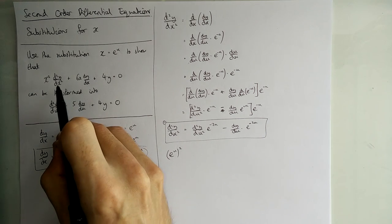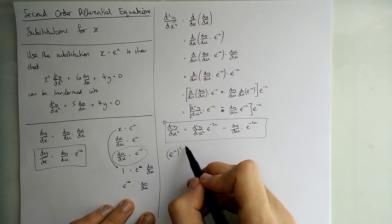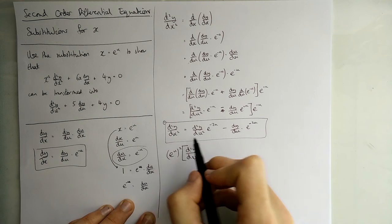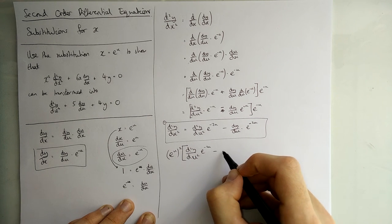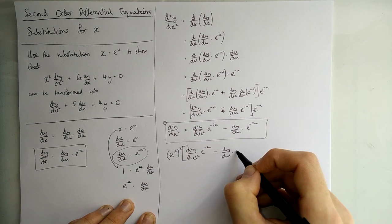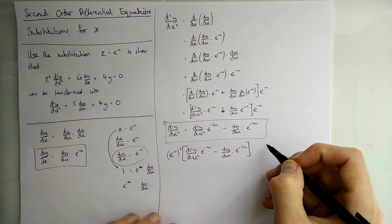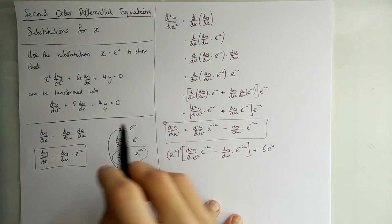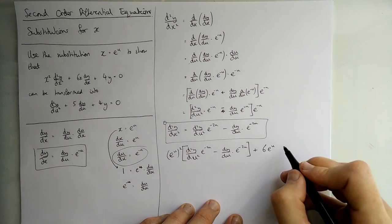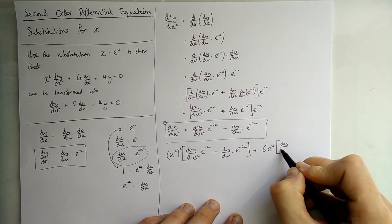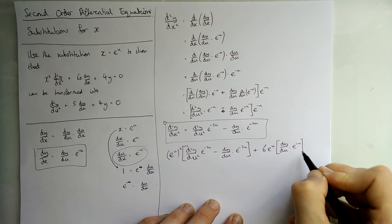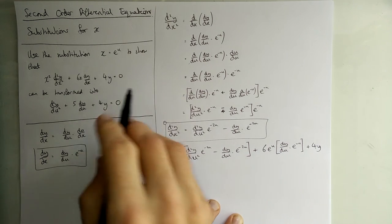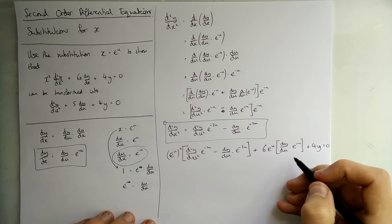My d²y/dx squared, I'm going to plug in this thing, so big bracket. This is my replacement for my second differential of y with respect to x. And then we've got plus 6x, so 6 lots of e to the u. And then we put in the dy/dx. dy/dx is this thing. So dy/du times by e to the minus u. And then we just add 4y. We haven't got to change that because that y has no x term in, and that's all still equal to 0.